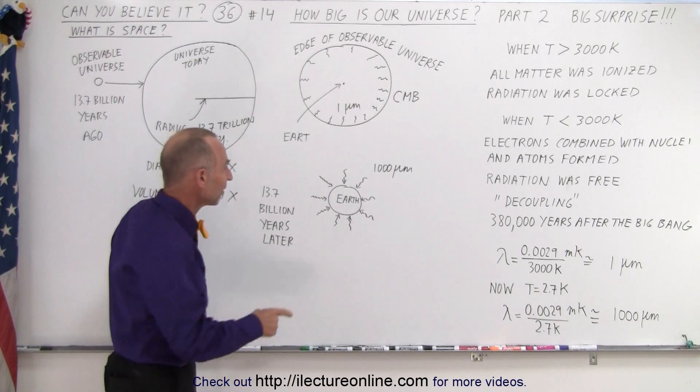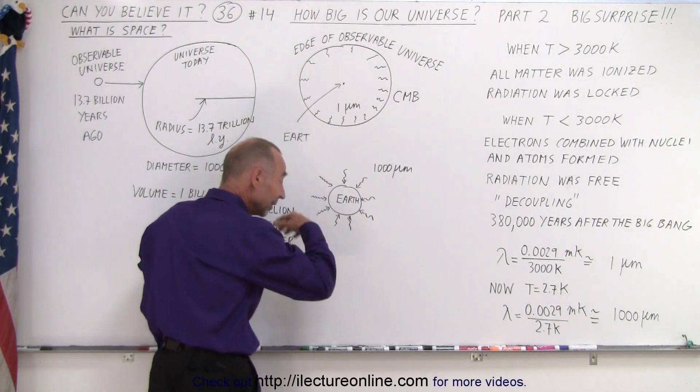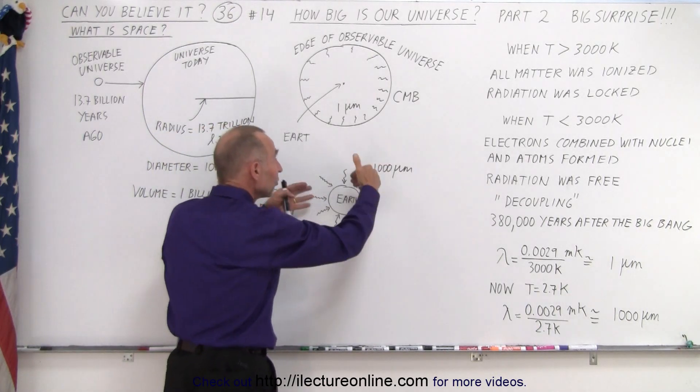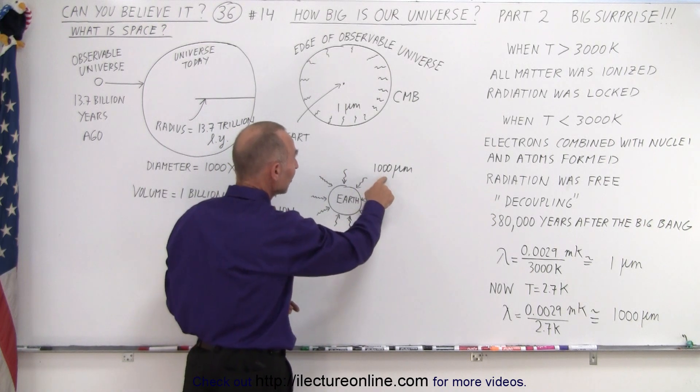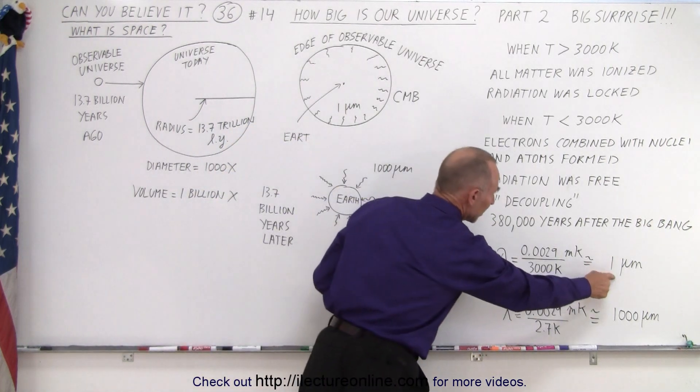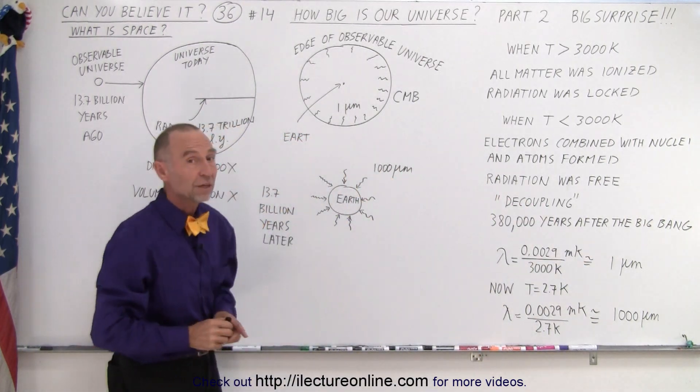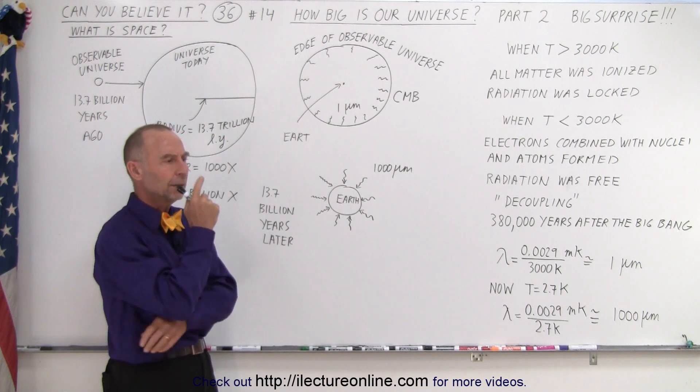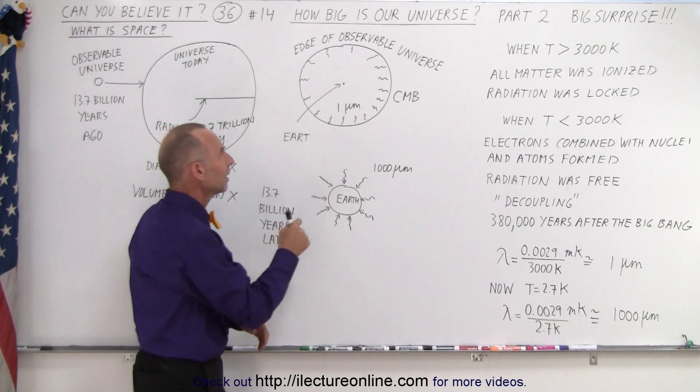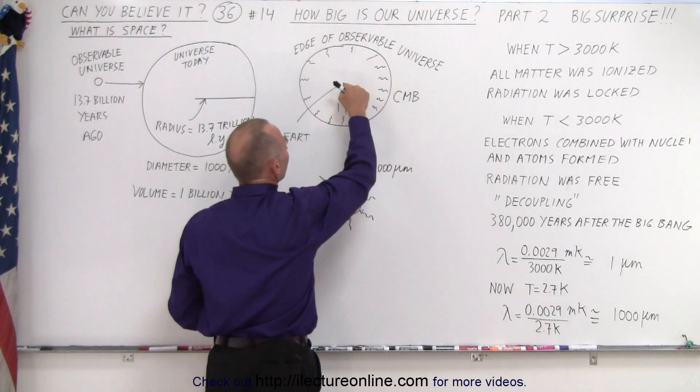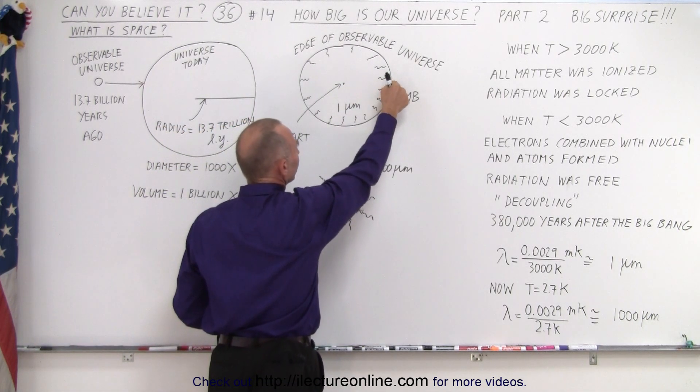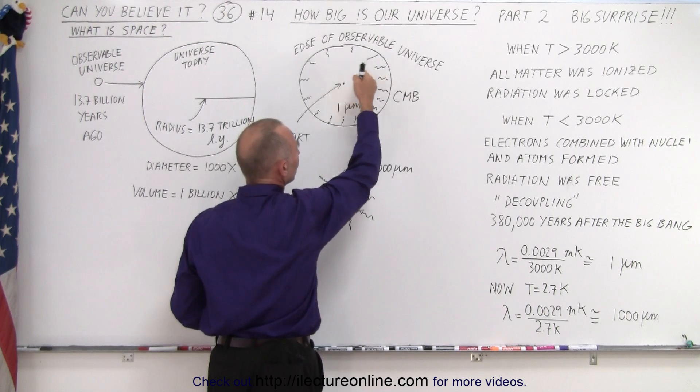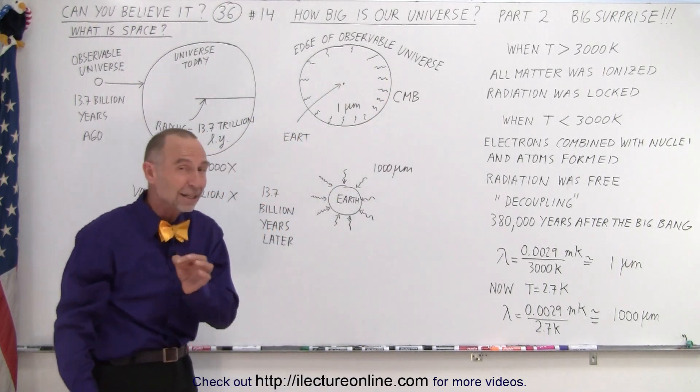And 13.7 billion years ago, a billion years later, it reached the Earth. But of course, it had stretched from one micrometer length to a thousand micrometers in length. Well, that means that the universe here, from the Earth to the edge of the universe, from where this radiation started, was 13.7 billion light years away from us.